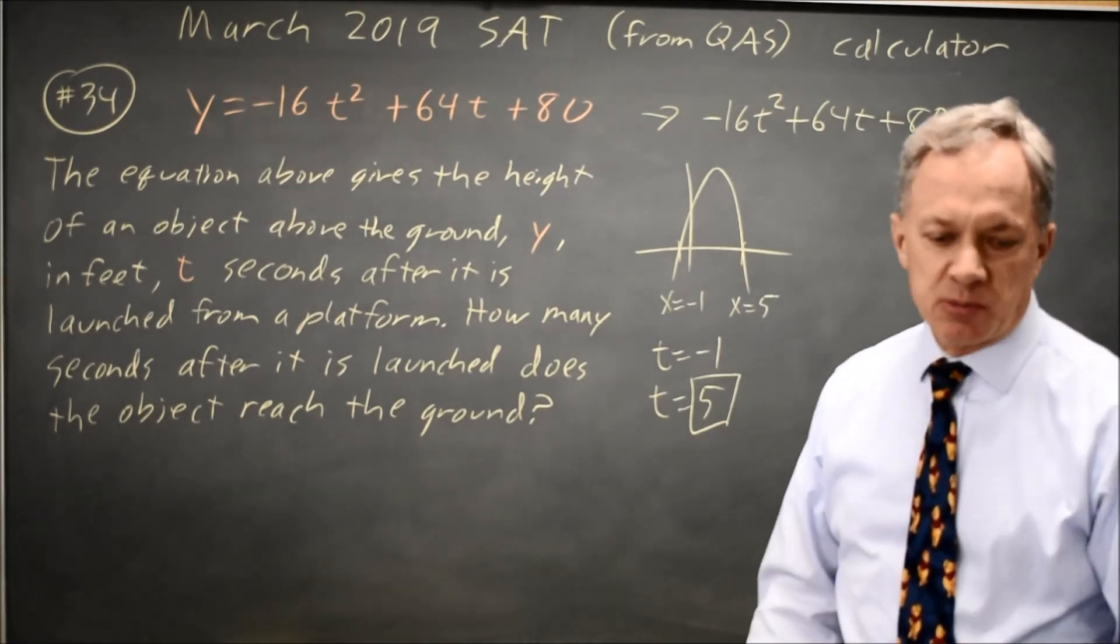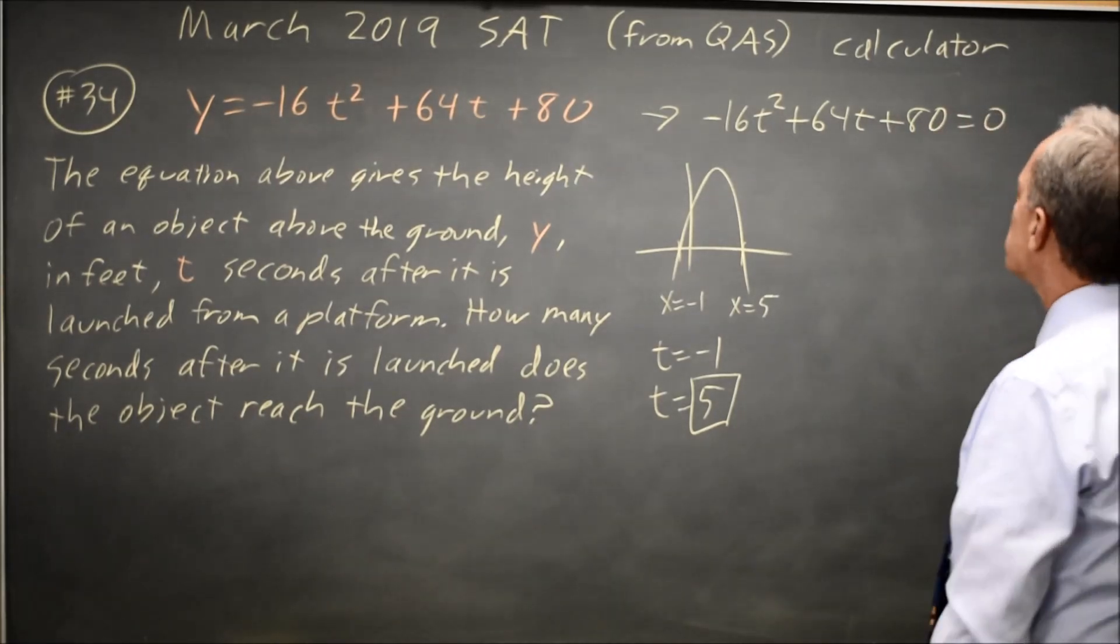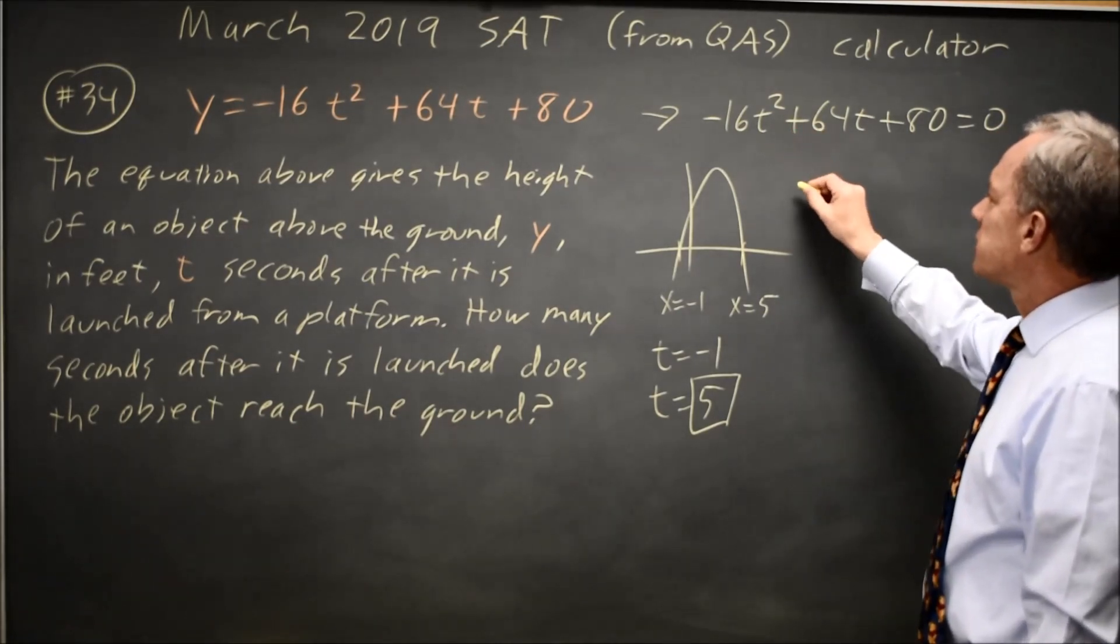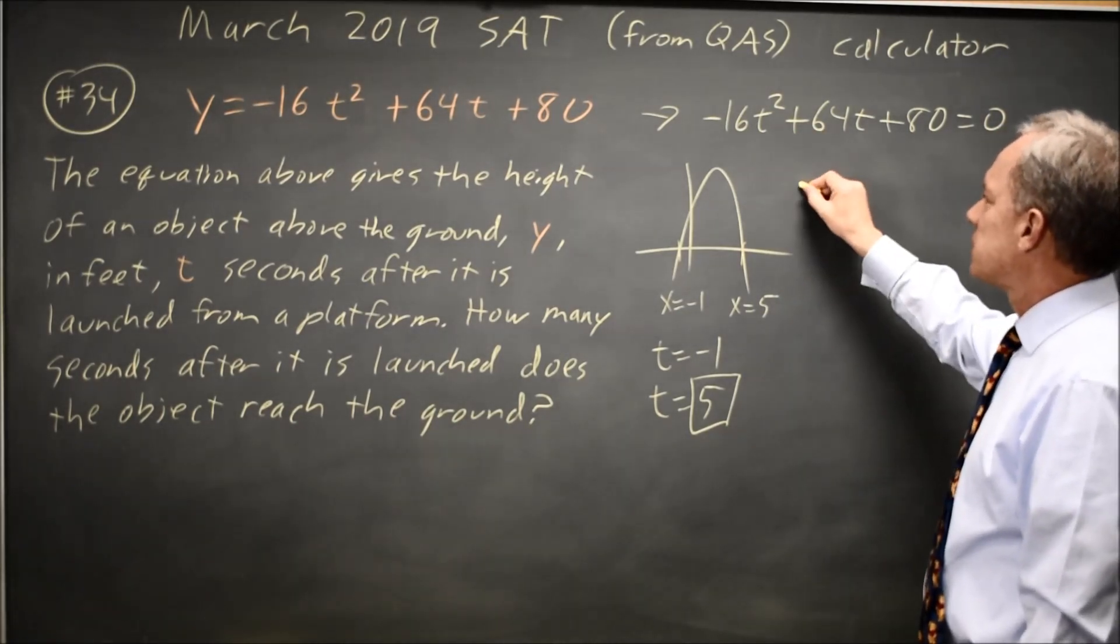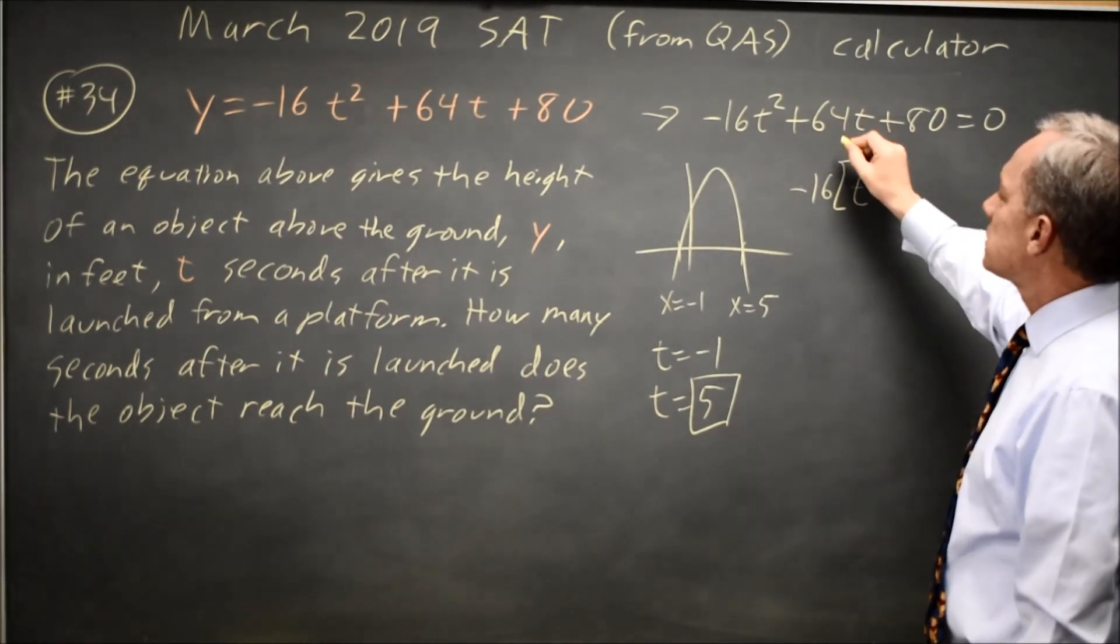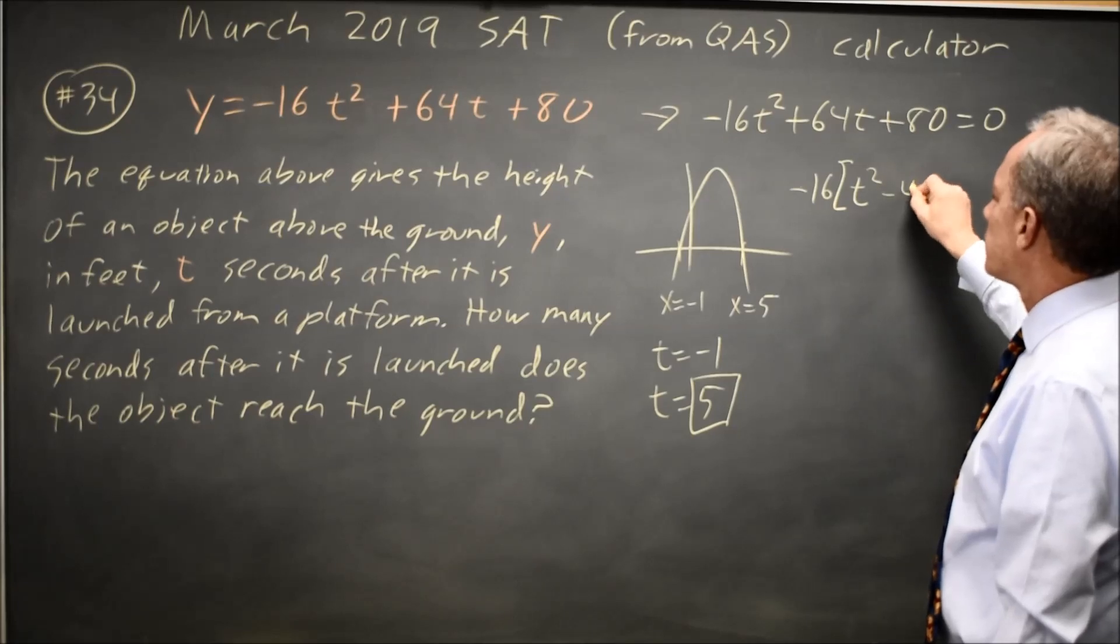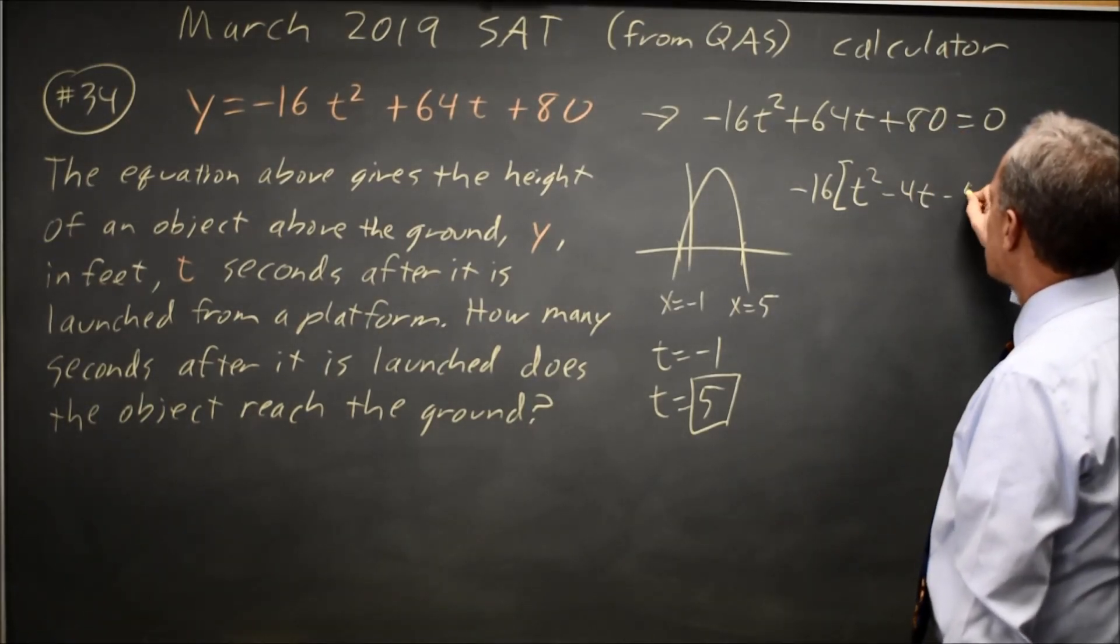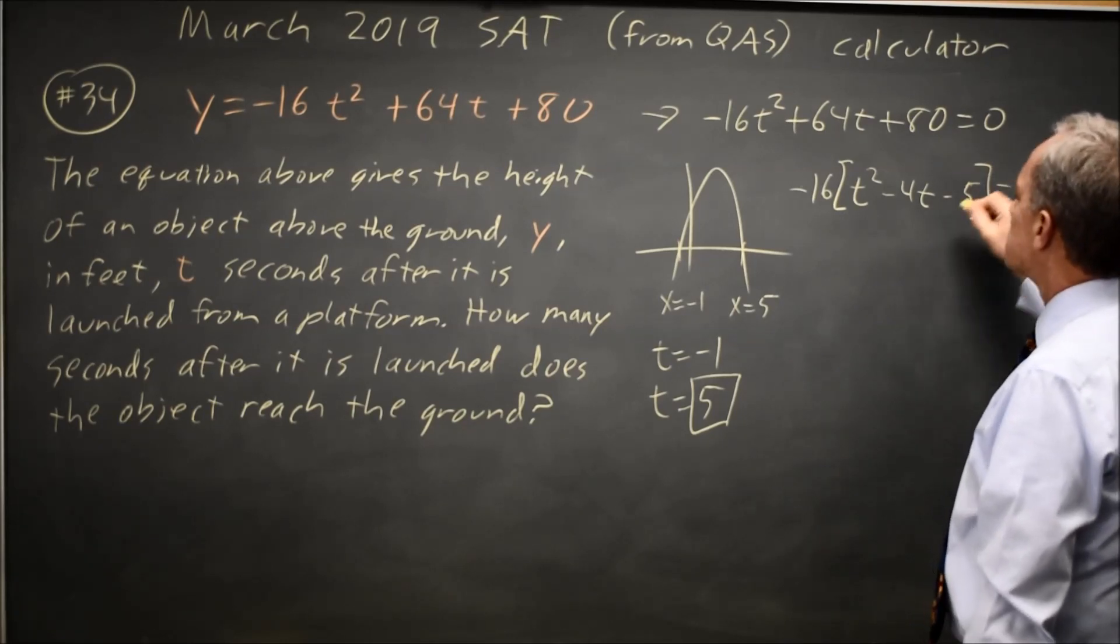If I wanted to do this by hand, which I would only do for fun, I certainly wouldn't take the time on the SAT unless my battery's done. I would factor out a negative 16, and that's the least of t squared. 16 times 4 is 64, so minus 4t, and 16 times 5 is 80, so minus 5 equals 0.